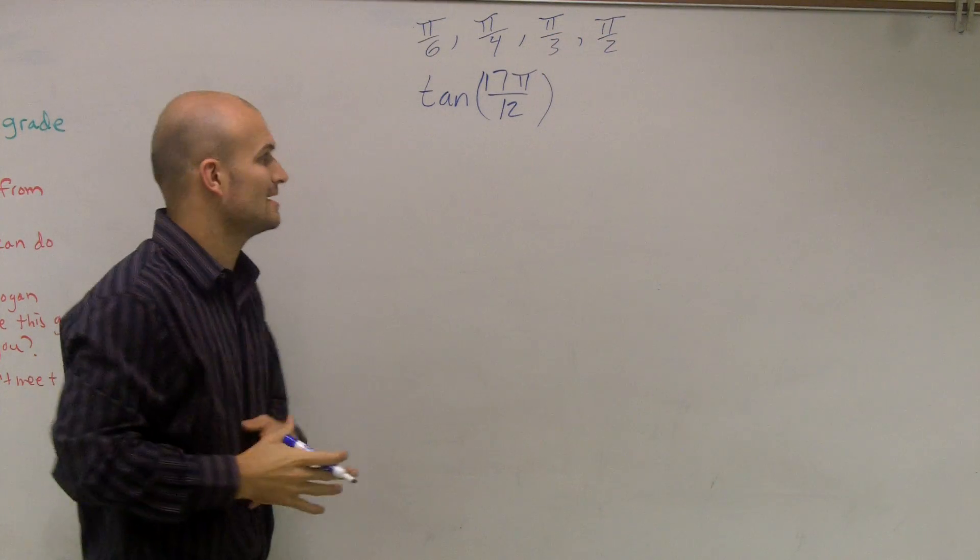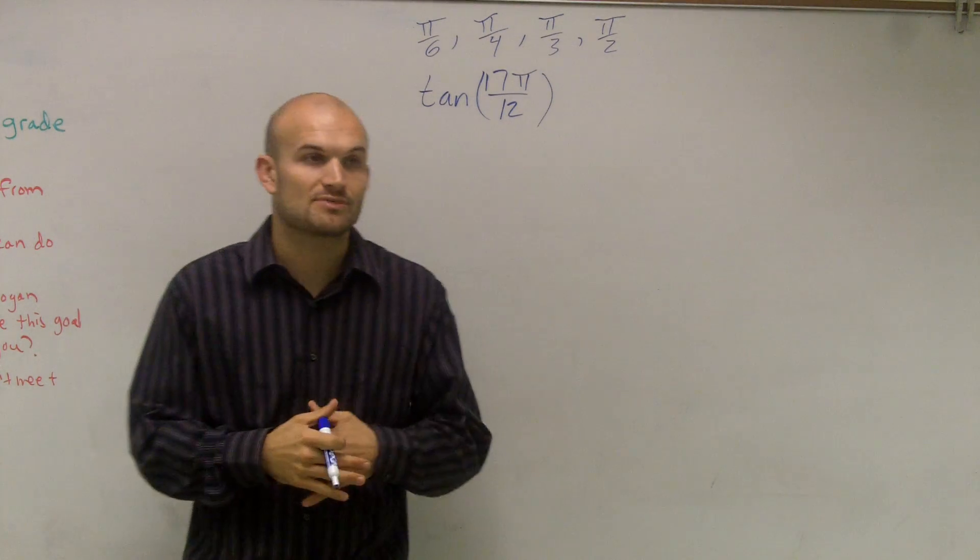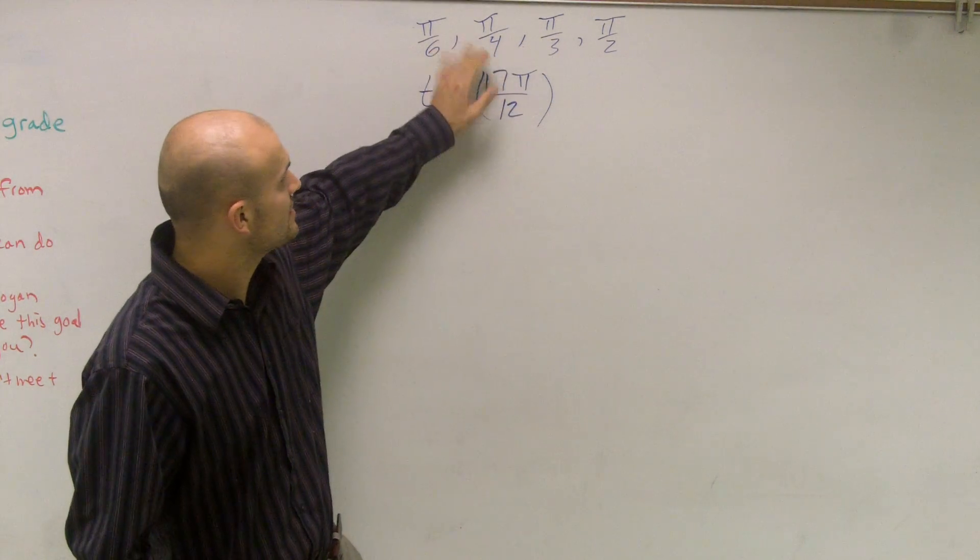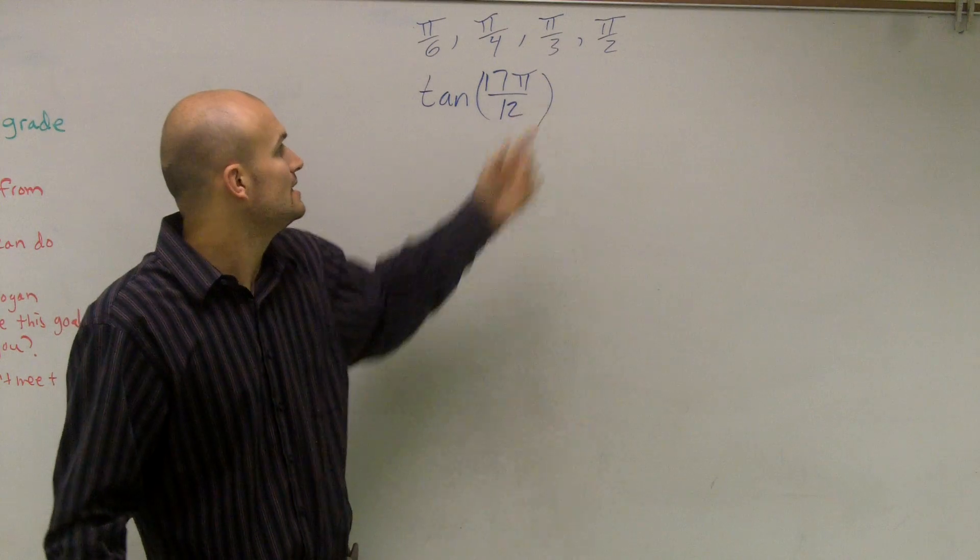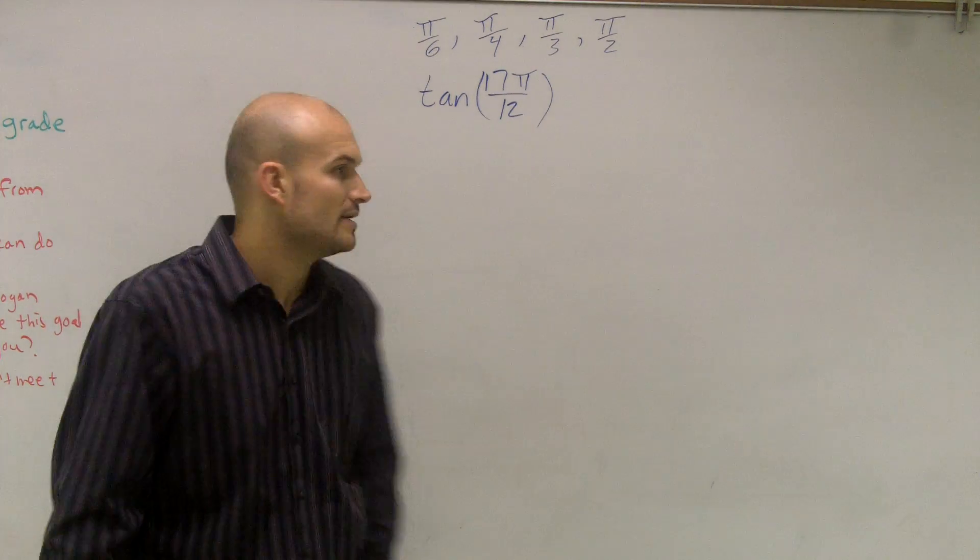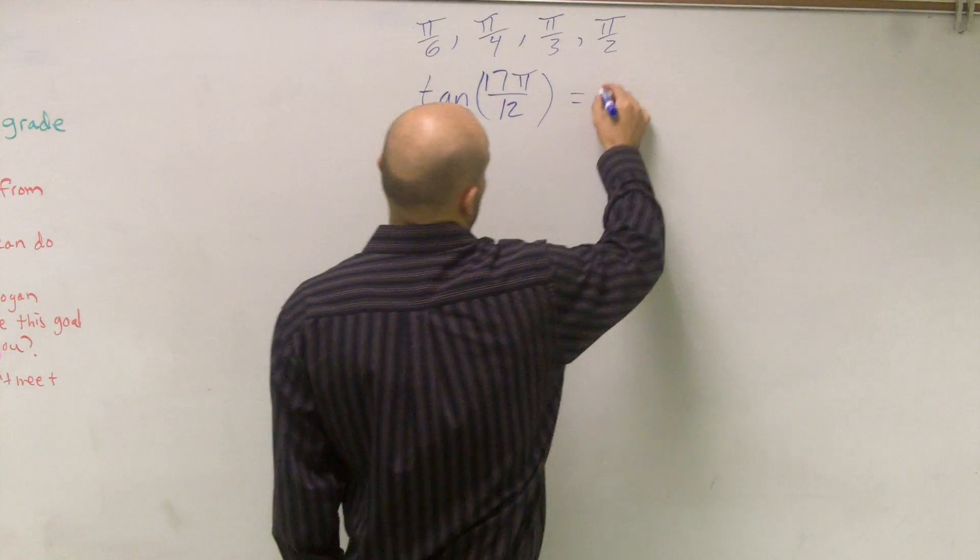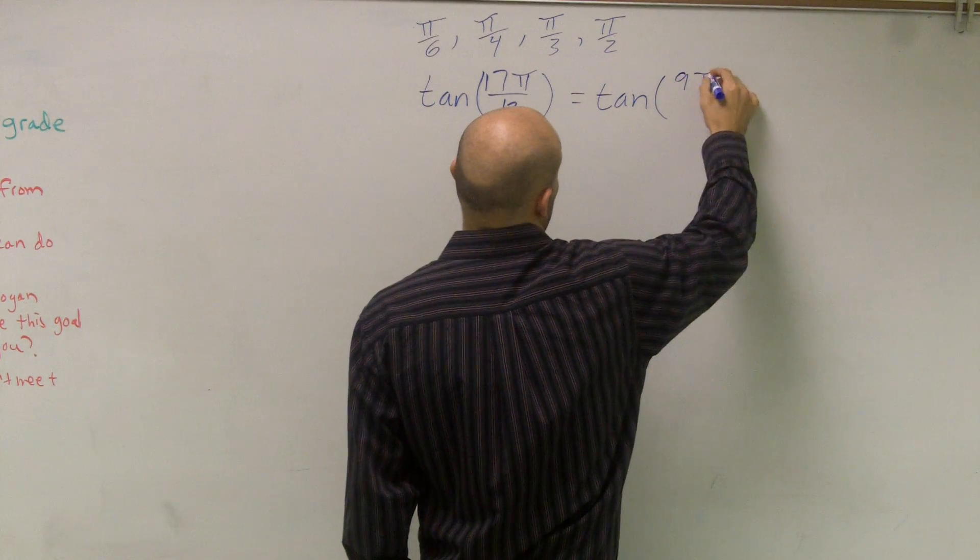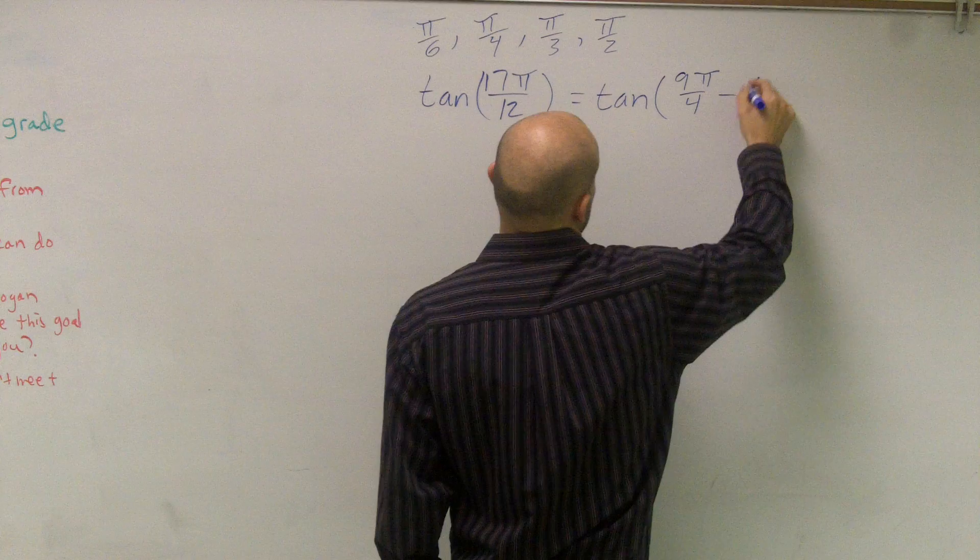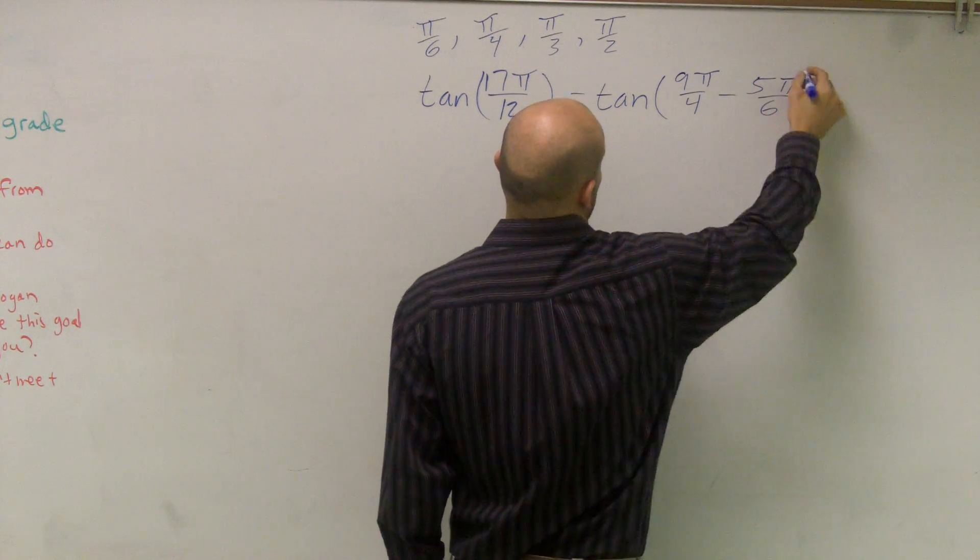So what I did is I just kind of thought of a couple problems and picked some numbers for my numerator that I can work with either adding or subtracting to get me at 17π over 12. And what I came up with is I can rewrite 17π over 12 as tangent of 9π over 4 minus 5π over 6.